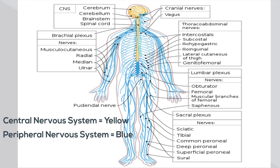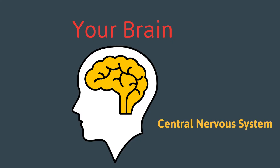Your spinal cord, which is part of the central nervous system, receives information from the skin and muscles of your body. It also carries nerves that control all of your movement. Your brain receives information directly from your body and the spinal cord.